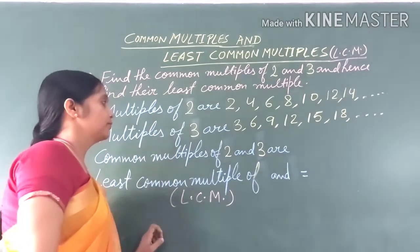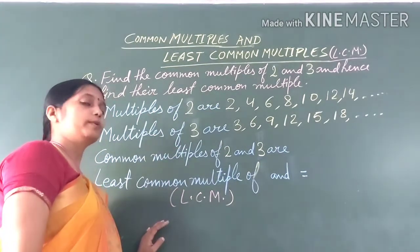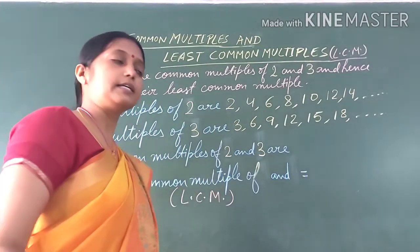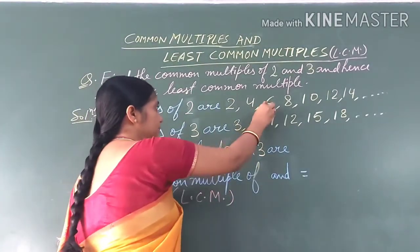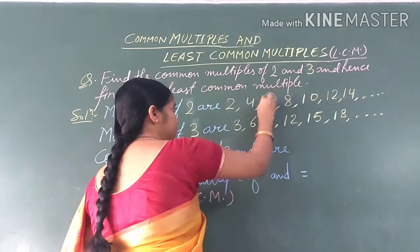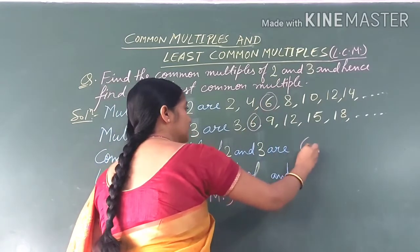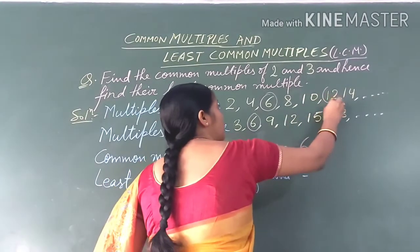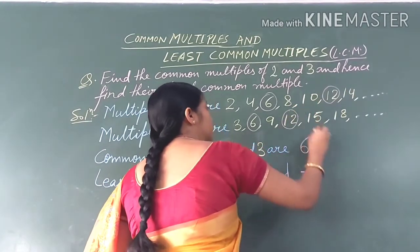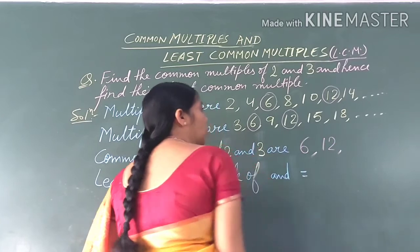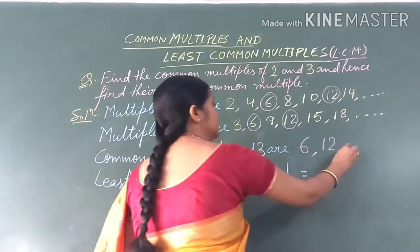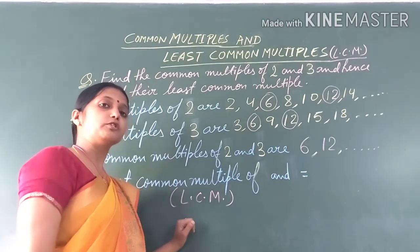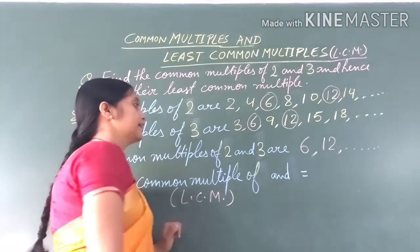Then, what are the common multiples of 2 and 3? We look for numbers that appear in both lists. The first common multiple is 6, since 6 appears in both. The next common multiple is 12. We can find more common multiples this way. The smallest of these common multiples is 6.